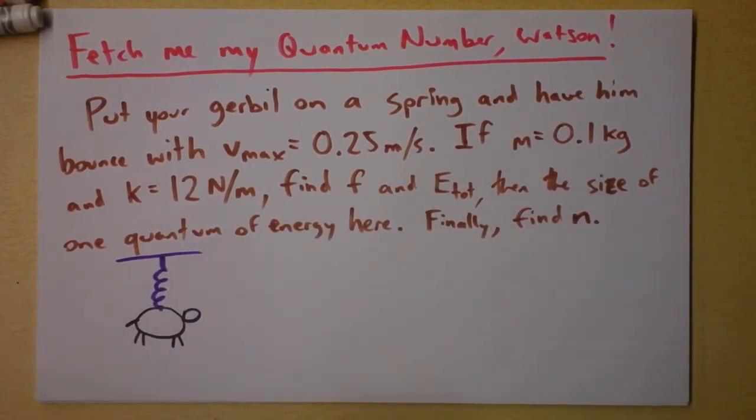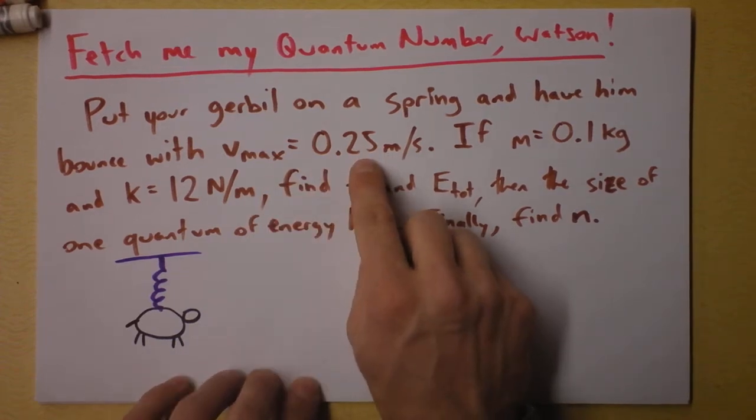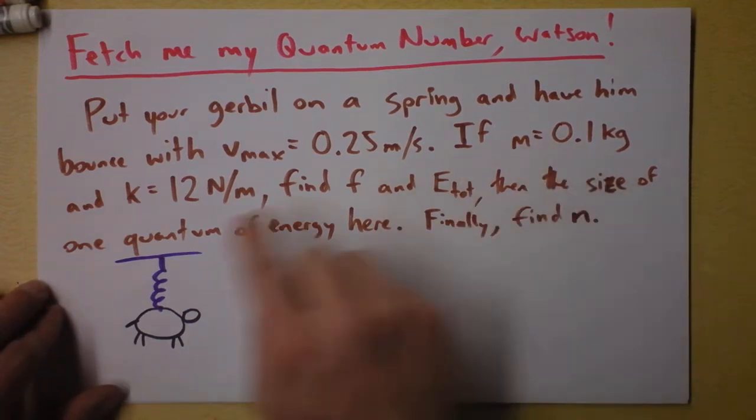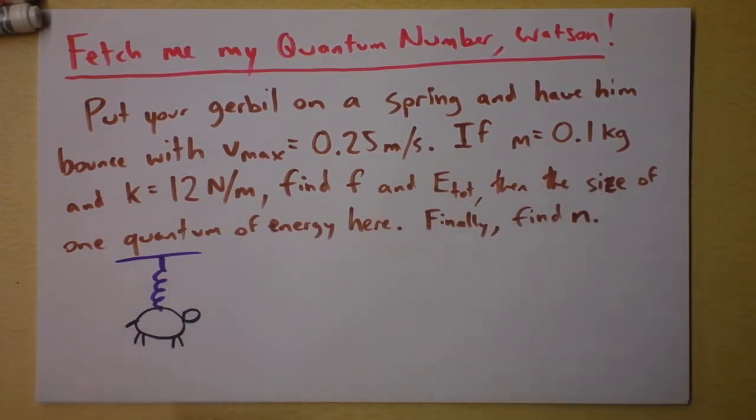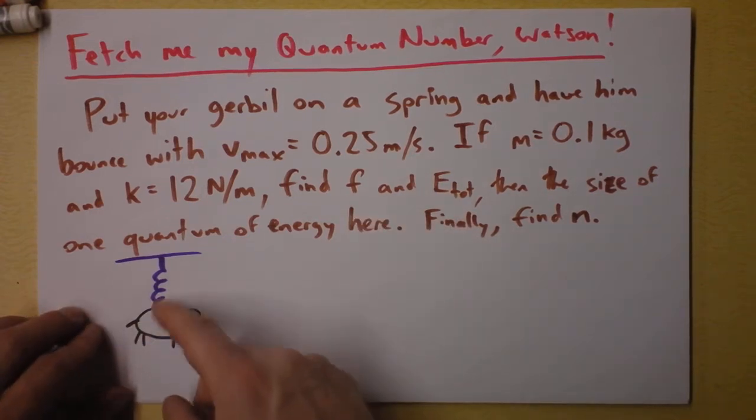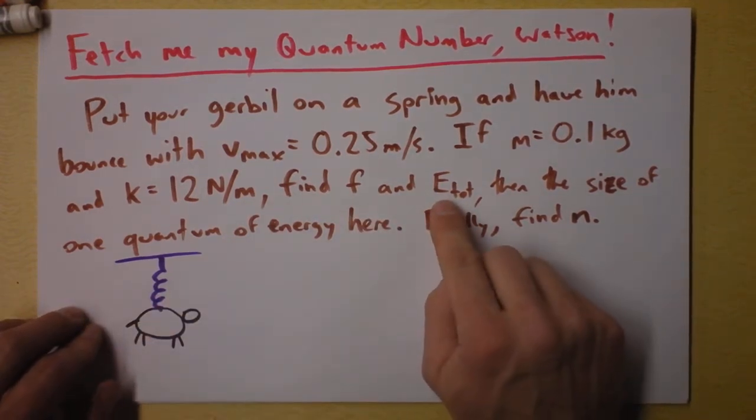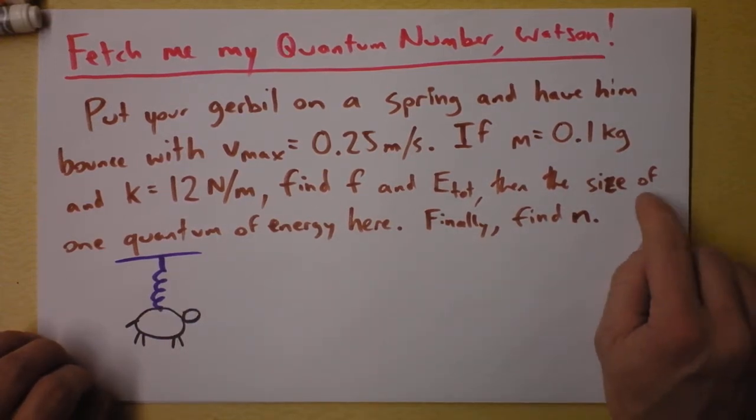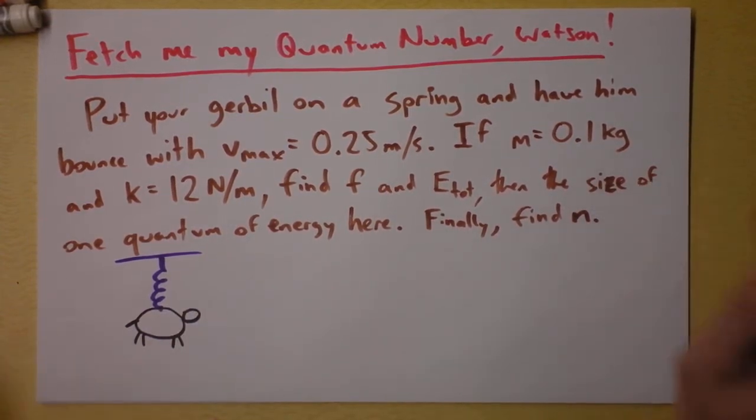Put my gerbil on an inductor, just kidding. He's on a spring and have him bounce with a maximum speed of a quarter meter per second. The mass of the gerbil is 0.1 kilograms and the spring constant is 12 newtons per meter. I want you to find the frequency at which the gerbil will be shaking up and down and the total energy of the oscillating gerbil system. Then I want you to find the size of one quantum of energy here.